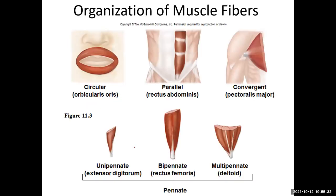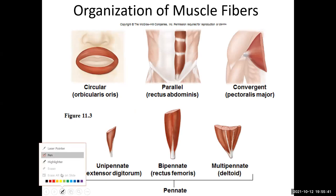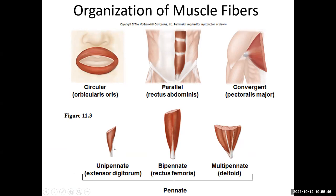Here you can see the different organizational features of our muscle fibers: circular, parallel, convergent, uni-pennate, bi-pennate, and multi-pennate.